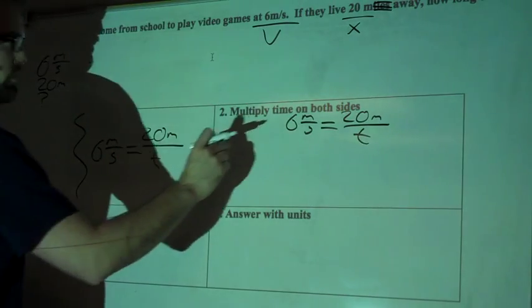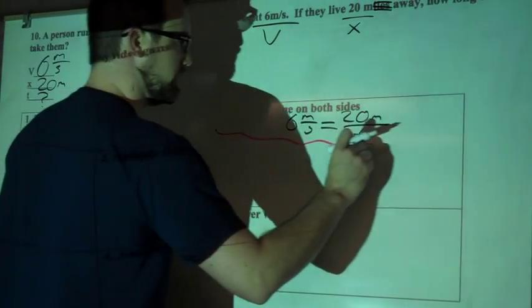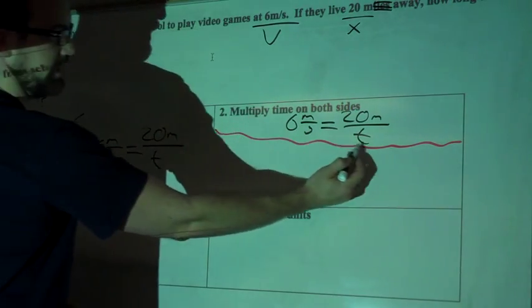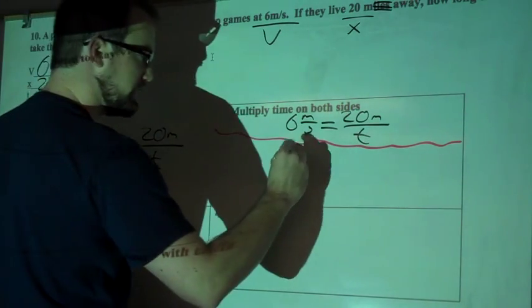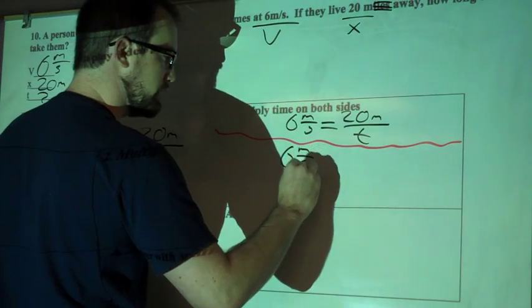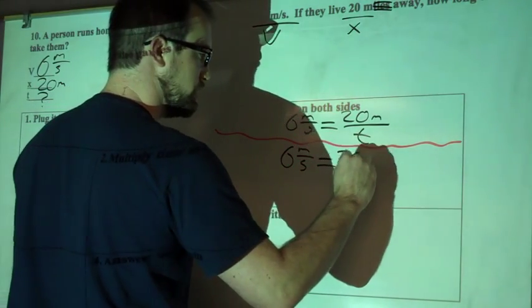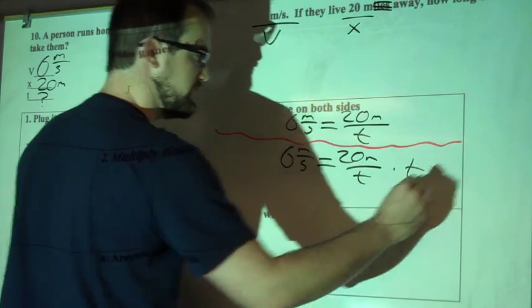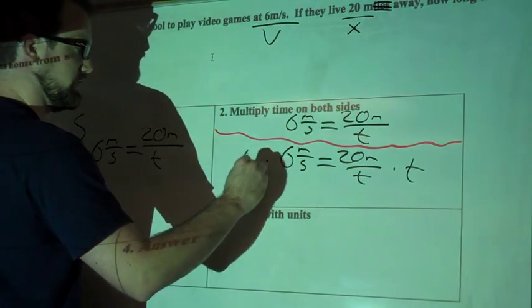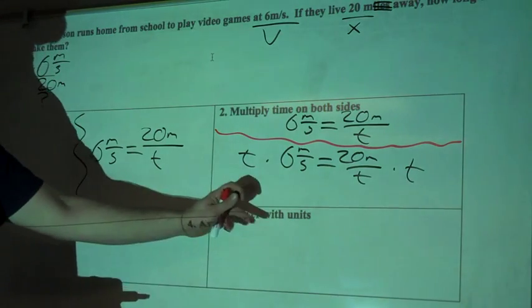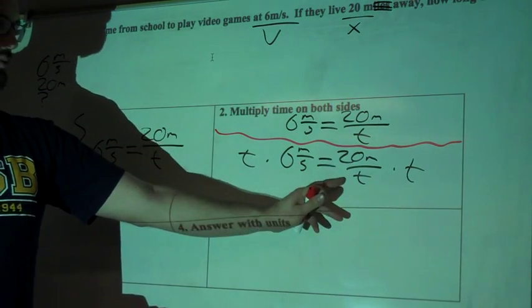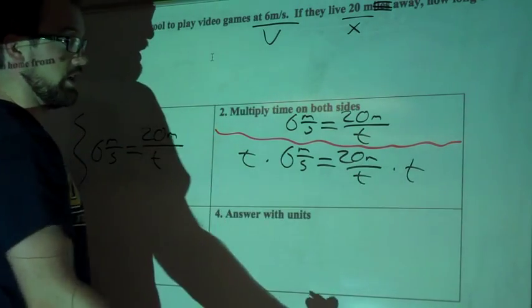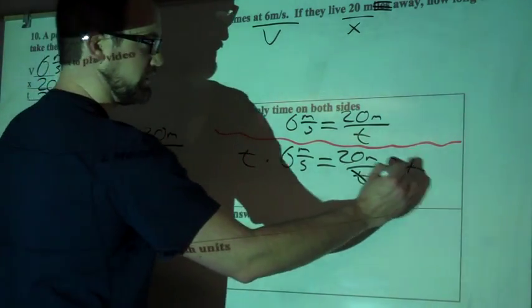All right, separate this out. So I'm going to multiply time on both sides to get rid of this in the denominator. So I have 6 meters per second equals 20 meters divided by T. Multiply T on both sides times T. So now I've got T times 6 meters per second equals 20 meters divided by T times T. Something we can do real quick, and this is what we were trying to do originally. Let's cancel out these T's.